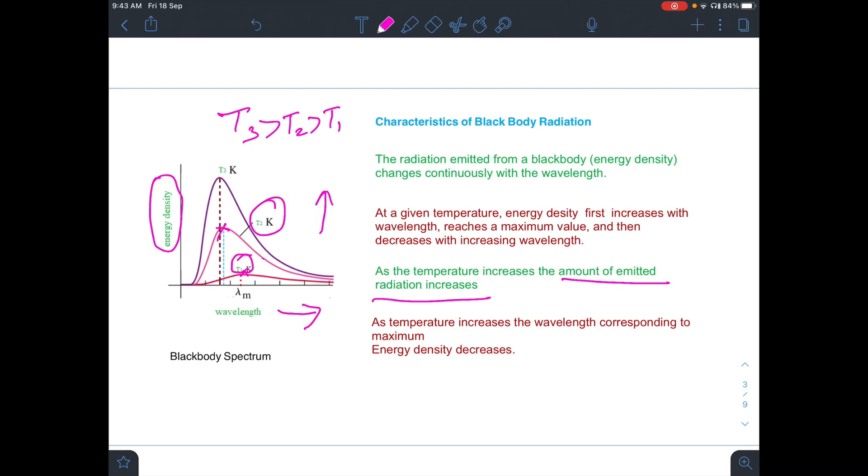And as temperature increases, the wavelength corresponding to maximum energy density which we call lambda m decreases. So you have Wien's displacement law here that lambda m times T is constant. When you increase the temperature, this wavelength corresponding to maximum radiation intensity will decrease with temperature.